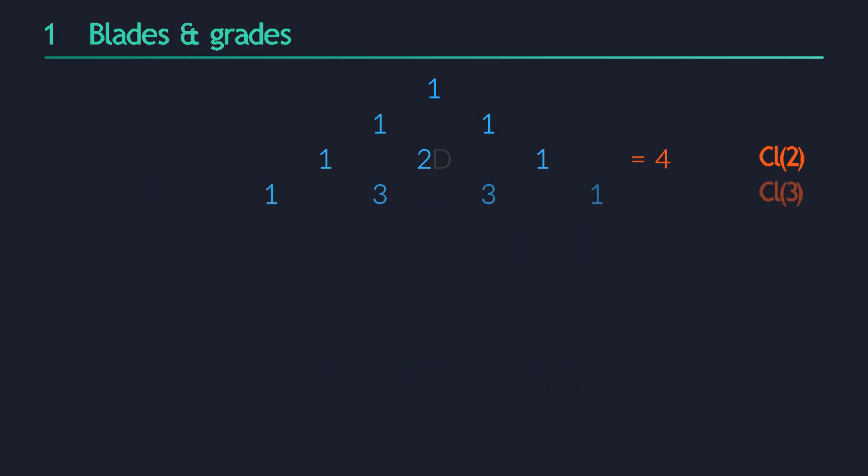Later, in 3D, we will have one basis scalar, three basis vectors, three basis bivectors, and a single tri-vector. Adding this all up, we will have eight basis objects in total.